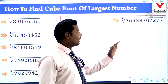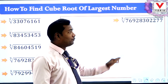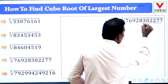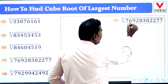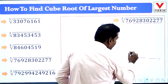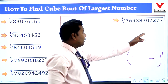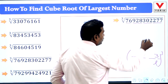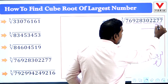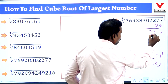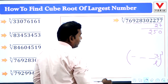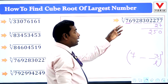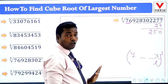Next number: 76928302277. First we make groups: 277, 302, 928, and 76 — four groups, so this is a 4-digit number. The unit place digit is 7. Since 3 cube is 27, the last digit is 3. We write 27 and subtract: 7 minus 7 = 0, 7 minus 2 = 5. The first group is 76; 4 cube is 64 and 5 cube is 125, but 125 > 76, so we take 4.